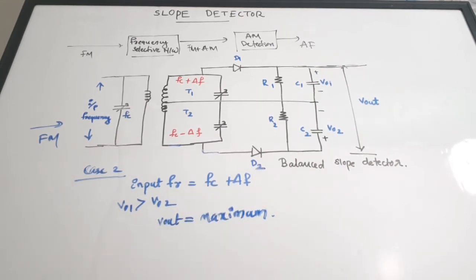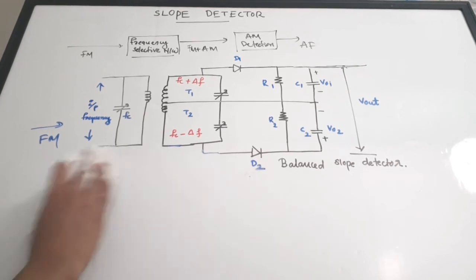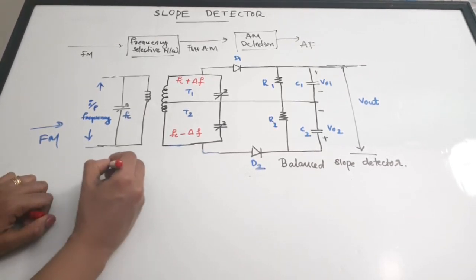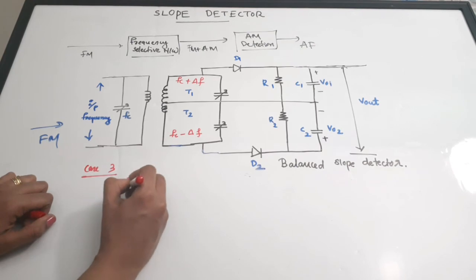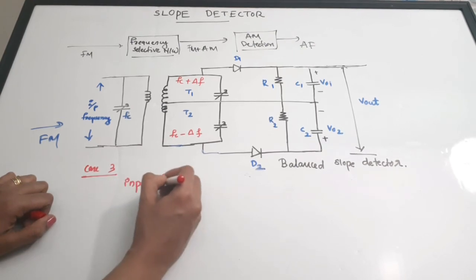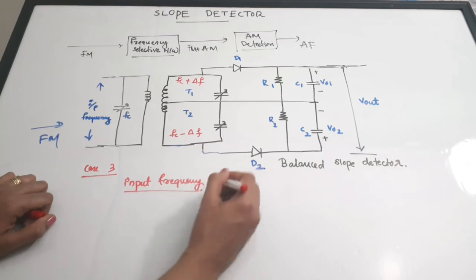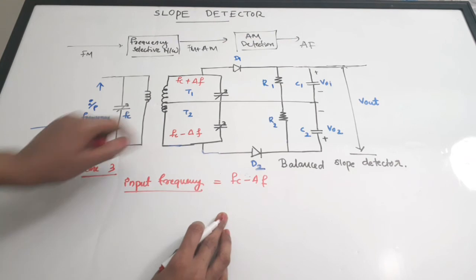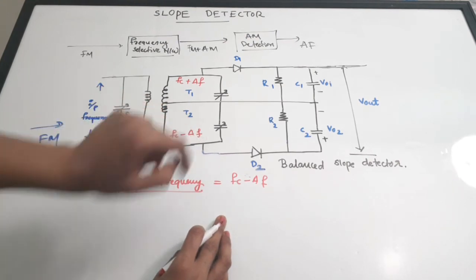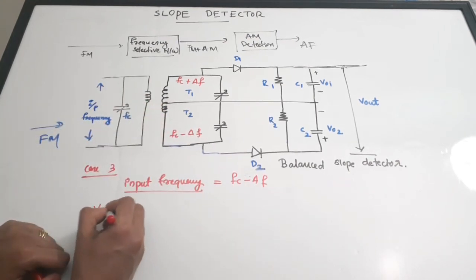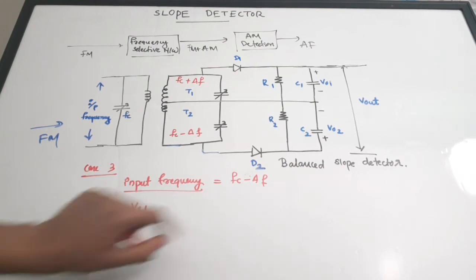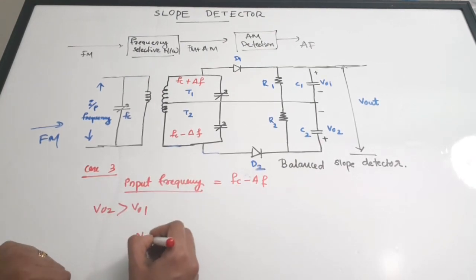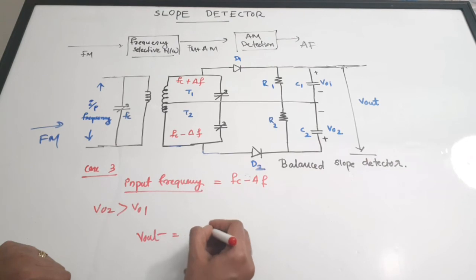Case three: consider that the input frequency is equal to fc minus Δf. This is a minimum frequency, and it is the frequency to which T2 is tuned. For this case, V02 will be greater than V01, and since it is a minimum frequency, Vout will now be minimum.